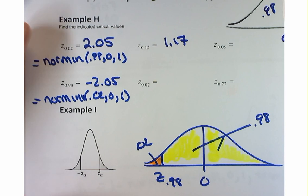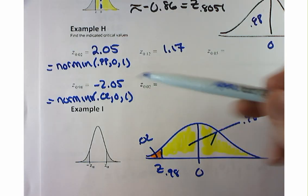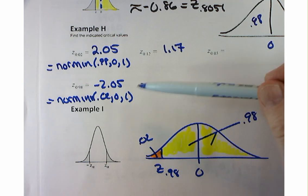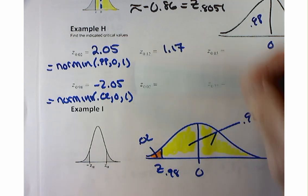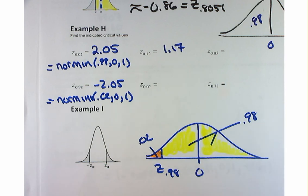We're going back to that symmetry — these are symmetric. So sometimes if you make a mistake, you can recover by saying: oh, it's just the negative of this one, or the positive of that one.